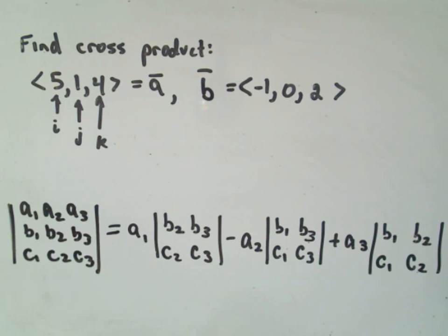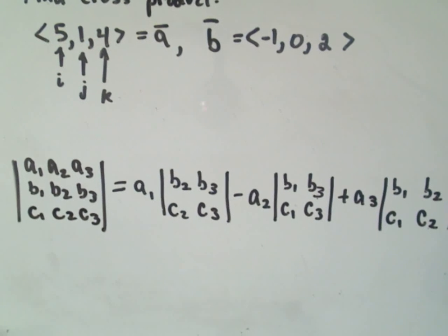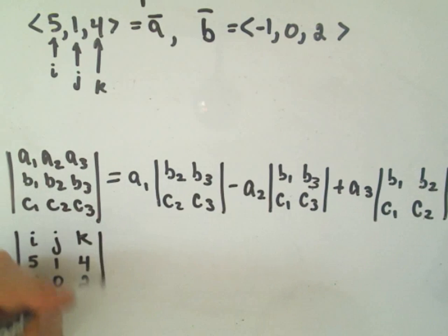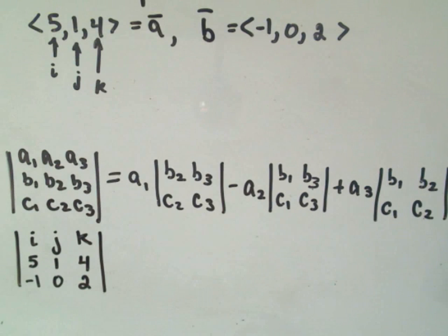What we're going to do is, we're going to basically replace our A1, A2, A3. What we do is we replace that with the standard basis components I, J, and K. And then we just write down the components for vector A. So that's got components 5, 1, 4. Vector B has components negative 1, 0, 2. And then we just use the above formula to calculate the cross product of the two vectors. This is going to be the cross product of A and B now.